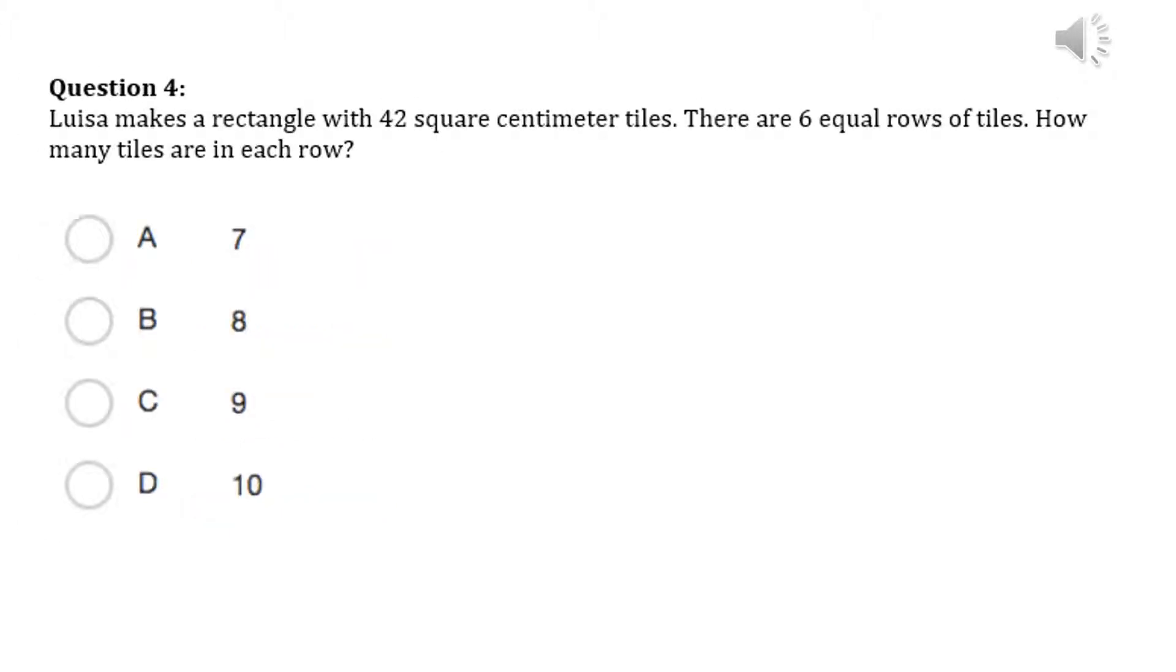Question 4. Louisa makes a rectangle with 42 square centimeter tiles. There are 6 equal rows of tiles. How many tiles are in each row?